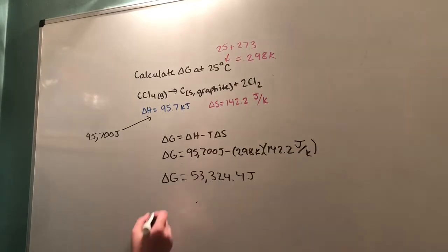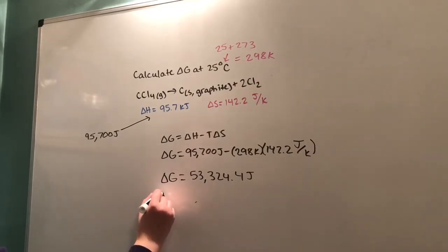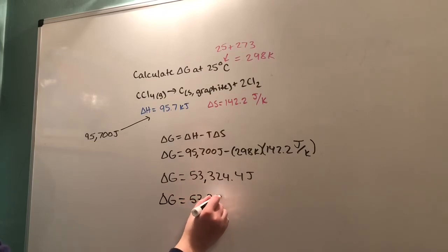Rounding this to three significant figures, we get ΔG = 53.3 kilojoules. Because ΔG is positive, this reaction is non-spontaneous at 25°C.